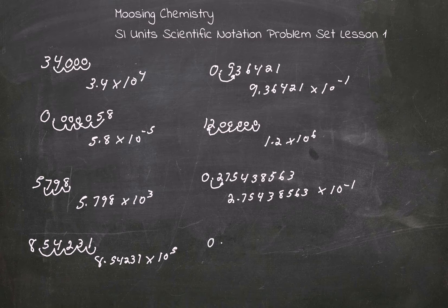Let's look at this one here. 0.000, 0, 0, 0, 0, 0, 0, 9, 2. Well, I hope I wrote that correctly. We go 1, 2, 3, 4, 5, 6, 7, 8. 9.2 times 10 to the negative 8.